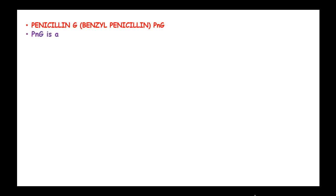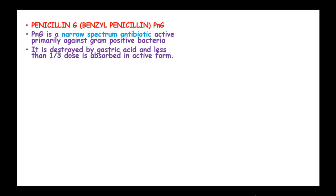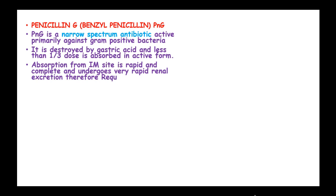We start with Penicillin G, or Benzylpenicillin. Penicillin G is a narrow spectrum antibiotic which is active against gram-positive bacteria. It is destroyed by gastric acid and less than a third of the dose is absorbed in an active form. Absorption from the intramuscular site is rapid and complete, and it undergoes very rapid renal excretion, therefore requiring regular injections every 4 hours.